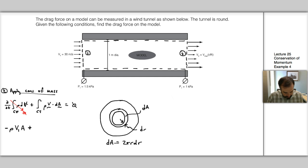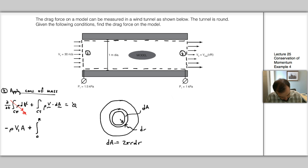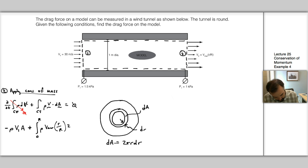We plug this into our integral. We integrate from zero to capital R of ρ times Vmax times r over R times 2πr dR, and that all equals zero. Since it equals zero, the ρ cancels out.